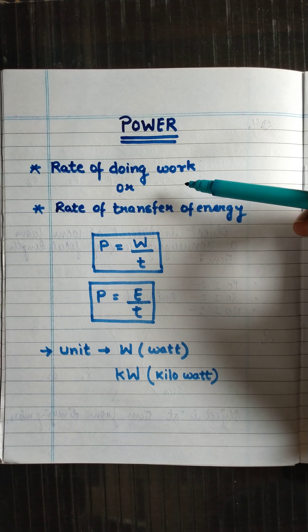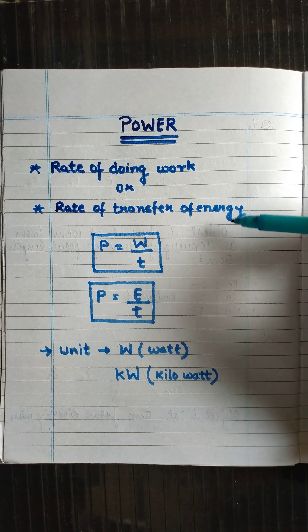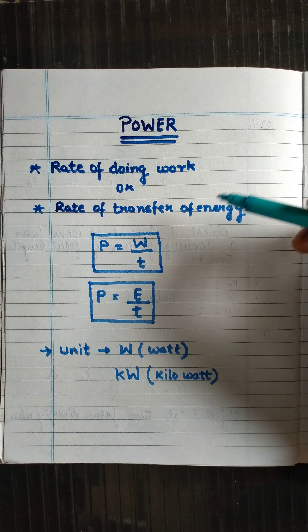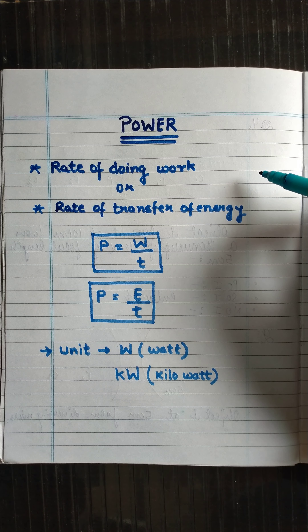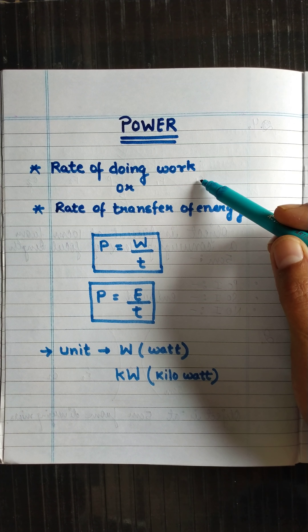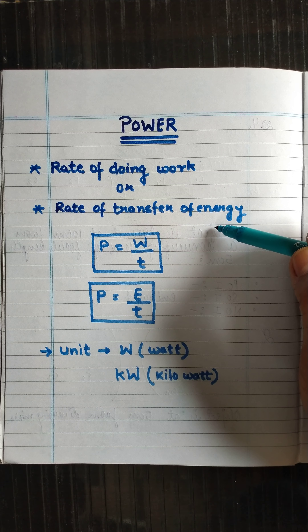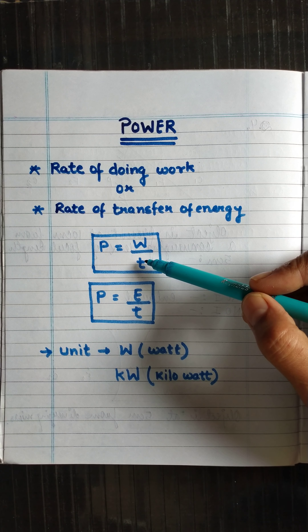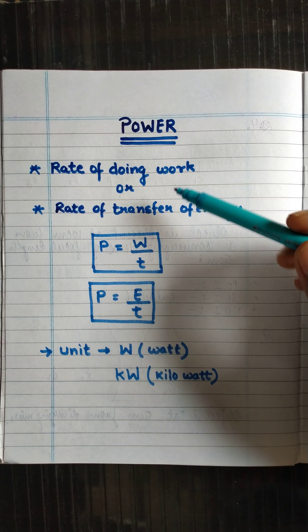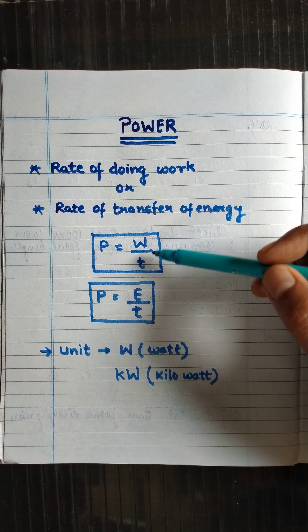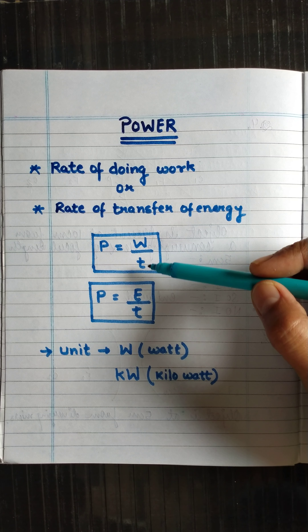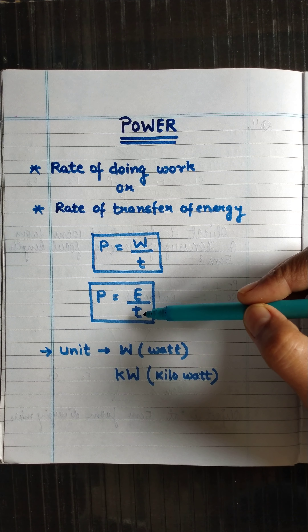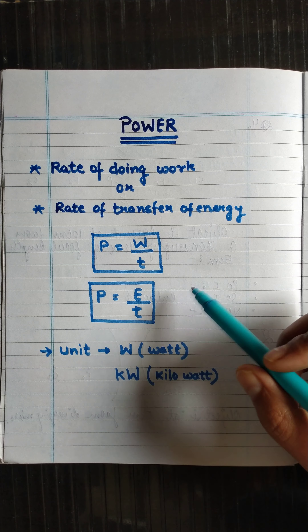There are two definitions: first, rate of doing work is called power. Second, the rate of transfer of energy is also called power — meaning how fast energy is transferred in the form of potential energy or kinetic energy. Rate means per unit time, so work done per unit time is called power.